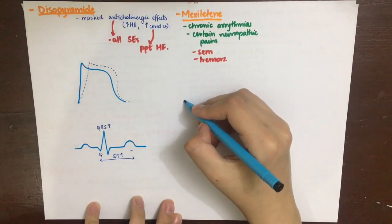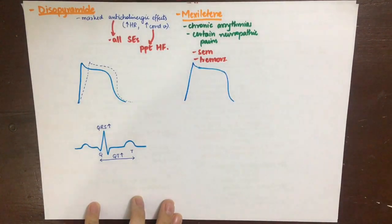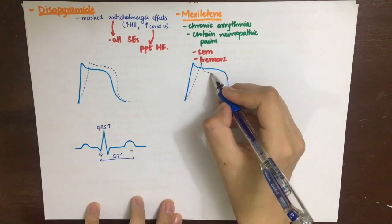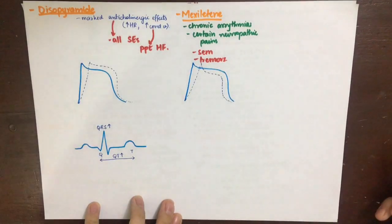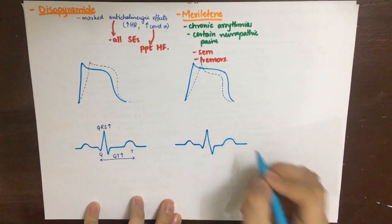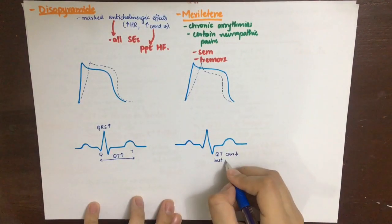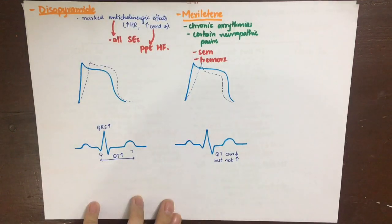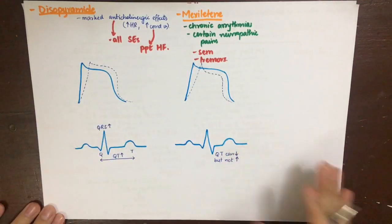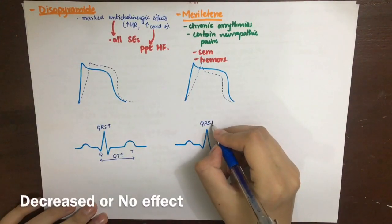The effects of class 1b drugs on the action potential show a decrease in the slope of phase 0 depolarization, and depolarization finishes more quickly, resulting in a decreased action potential duration. On ECG, the QT interval will be shortened and can never increase, and the QRS complex is minimally or not affected by lidocaine.